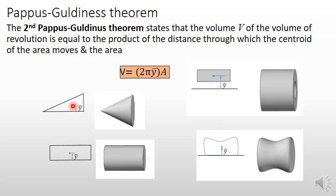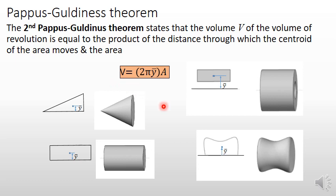This is the centroid of this triangular area. We know that this distance is one-third of the height. So this distance, ȳ, is known. If you know this ȳ, you can obtain the volume of this cone using this relation, where ȳ is the distance of the centroid from the axis of revolution. Similarly, in all these cases, by applying this equation, you can determine the volume of these objects.